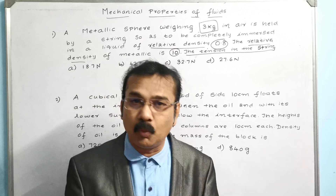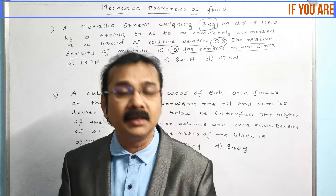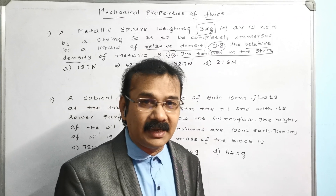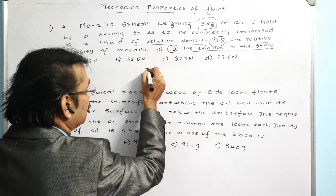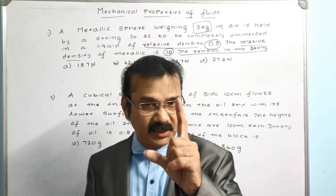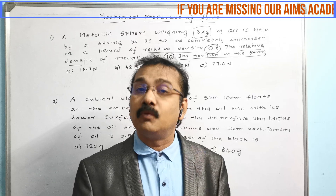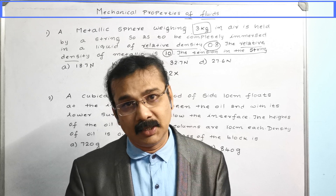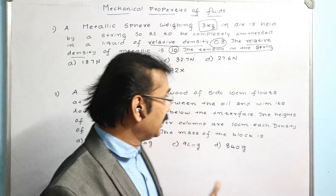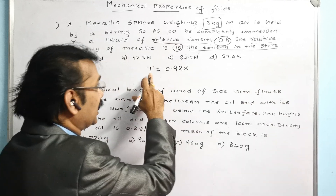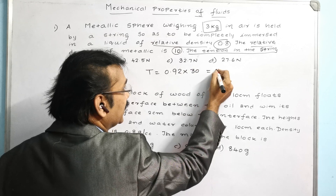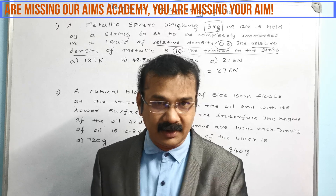For the shortcut to work, three things must be given: mass, one relative density, and the relative density of the metallic material. If 0.8 and 10 are given, use this cheat code: T = 0.92 × (mass in kg × 10). For 3 kg, treat it as 30. So T = 0.92 × 30 = 27.6 N. If the mass were 4 kg, use 40; for 5 kg, use 50, and so on.